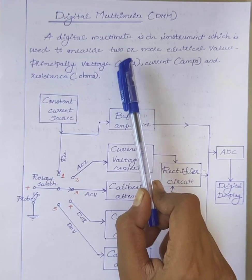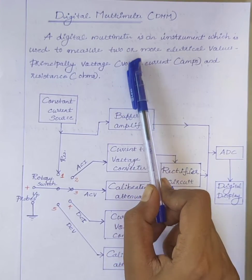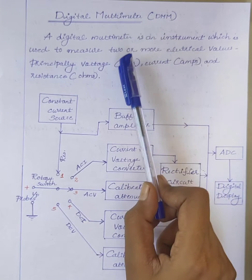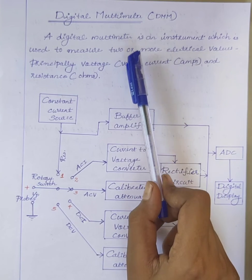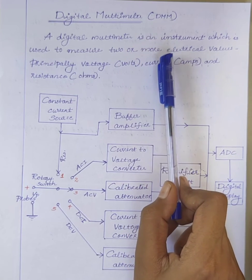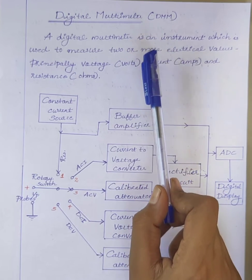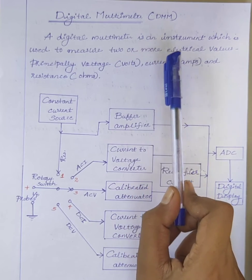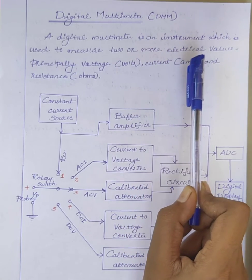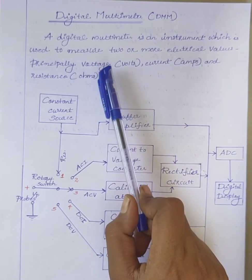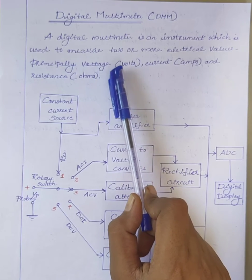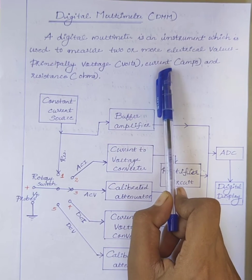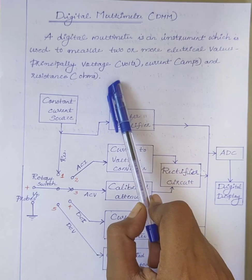Hello students, today we will discuss digital multimeters. A digital multimeter is an instrument which is used to measure two or more electrical values — mainly DC or AC voltage, DC or AC current, and resistance.